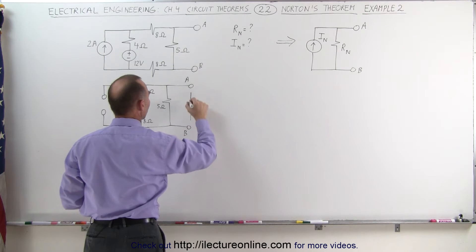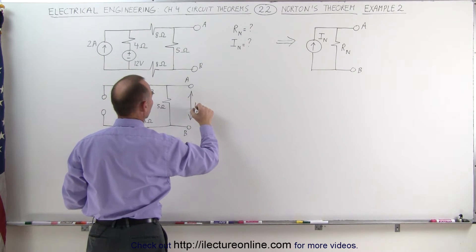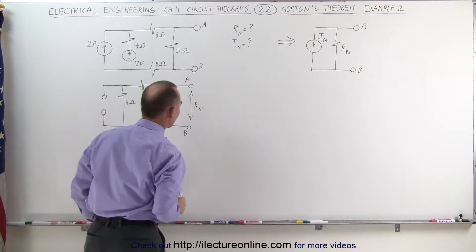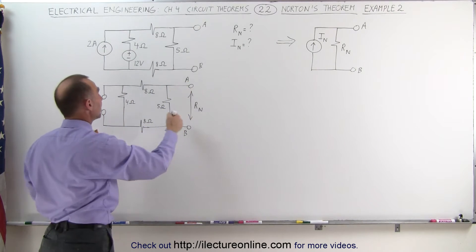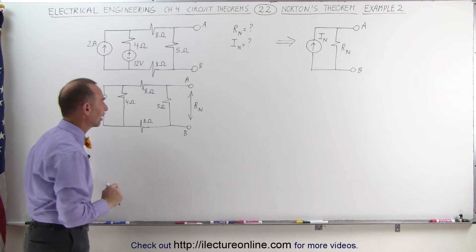And it turns out that the resistance measured between these two terminals can be considered the Norton resistance. All we have to do is figure out what the resistance between A and B is measured with a circuit that looks like this.